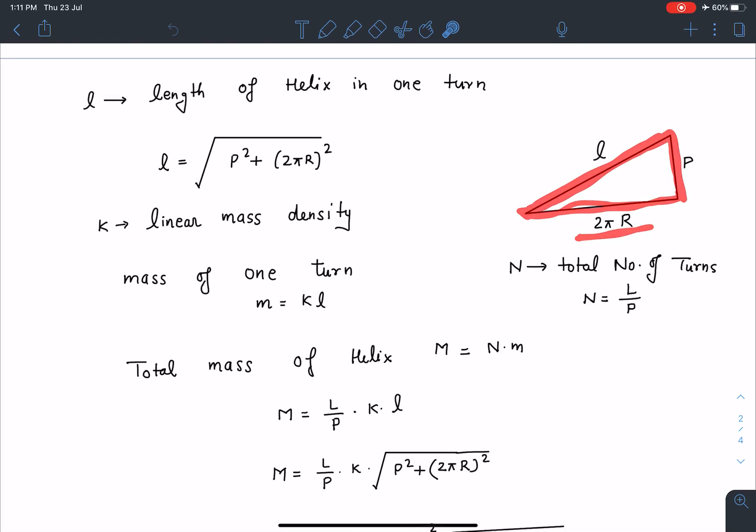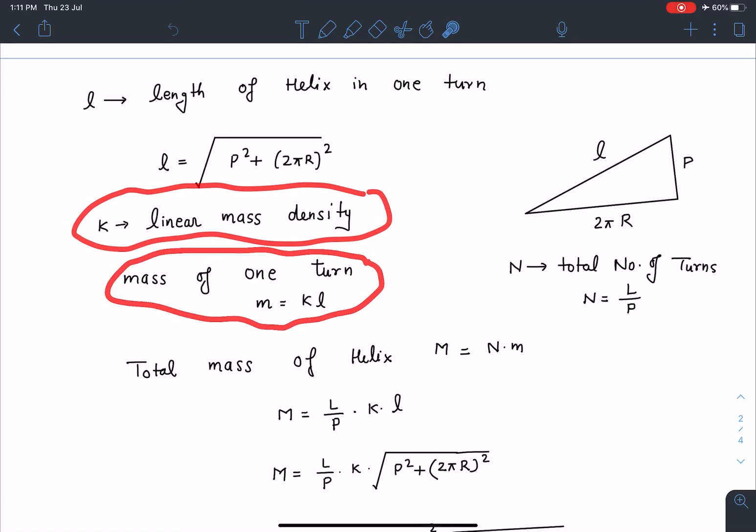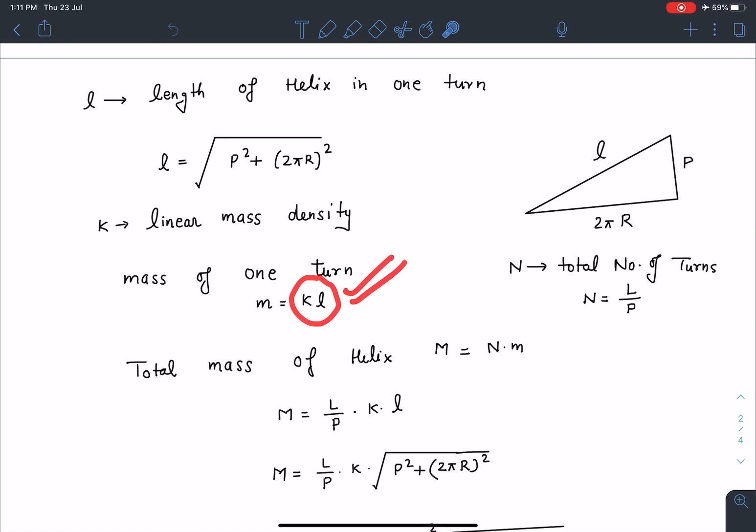So this is the length of the curve in one turn, which is l. So I can use Pythagoras theorem and write this l as √(p² + (2πR)²). Since K is given as the linear mass density, I can say mass of one turn of the helix is going to be K times small l.